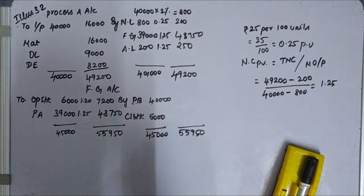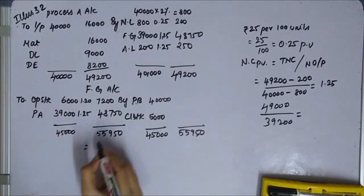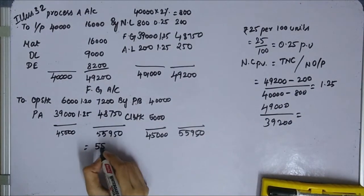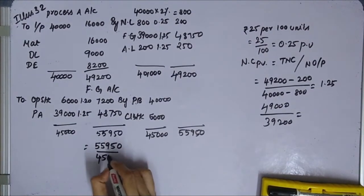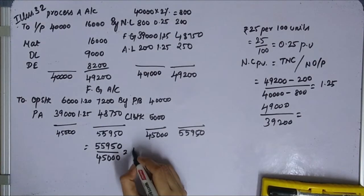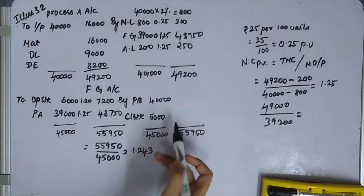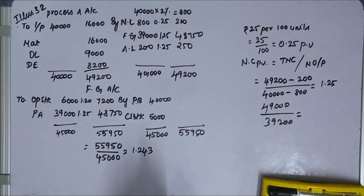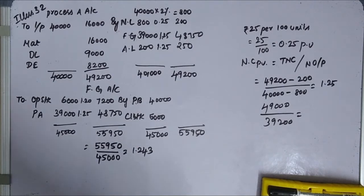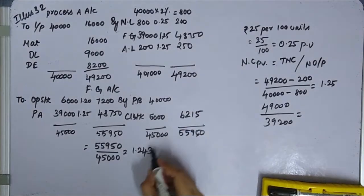To find the closing stock value using the weighted average method: total value 55,950 divided by total units 45,000 gives a weighted average cost of 1.243 rupees per unit. Closing stock is 5,000 units multiplied by 1.243, giving 6,215 rupees.